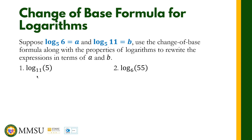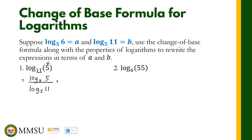We can rewrite this as a ratio of two logarithms. In the numerator this would be the logarithm of 5, and in the denominator that would be the logarithm of the base, which is the logarithm of 11. These logarithms can be of any base, and since our given is a logarithm of base 5, our logarithm should be in base 5. So we have logarithm of 5 in base 5 all over the logarithm of 11 in base 5.